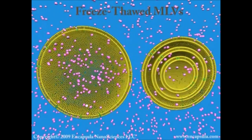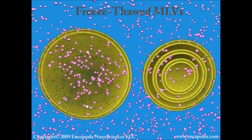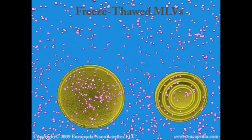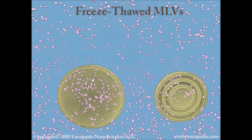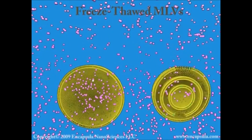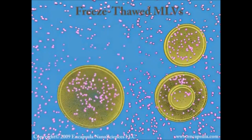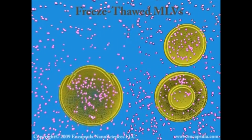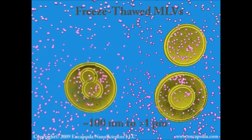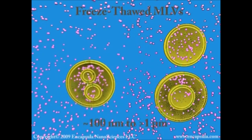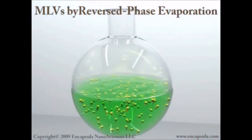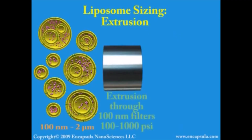The captured volume of these MLVs can be increased by freezing and thawing the liposomes several times. Repeated freezing and thawing ruptures and reforms the MLVs, resulting in an increased number of liposomes with fewer layers of lipid and more aqueous space inside each liposome. Thus, the freeze-thawed liposomes encapsulate more aqueous solute and often have a multivesicular morphology. The aqueous solute is now uniformly distributed inside each liposome.